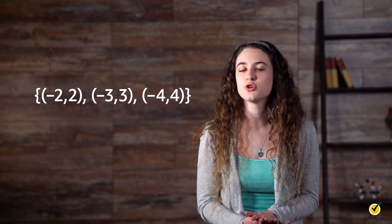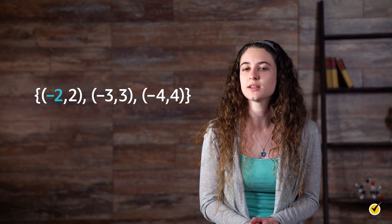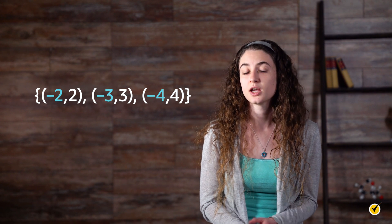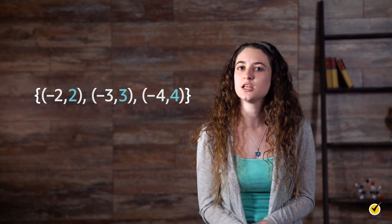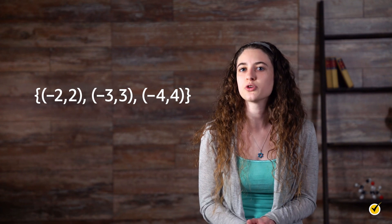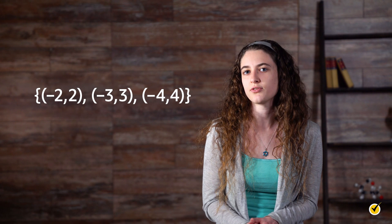Got the hang of it? Let's get through a few problems together and see. Is this a function? Negative 2, 2; negative 3, 3; and negative 4, 4. In this set of ordered pairs, the domain values are negative 2, negative 3, and negative 4. And the range values are 2, 3, and 4. Because each domain value is paired with only one range value, this relation is a function.